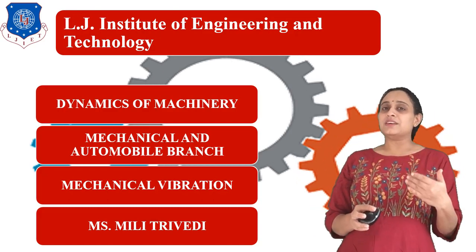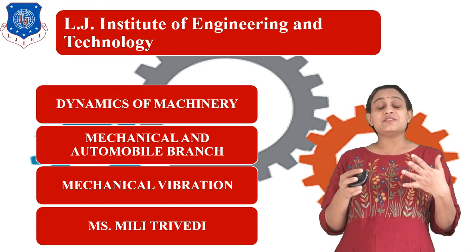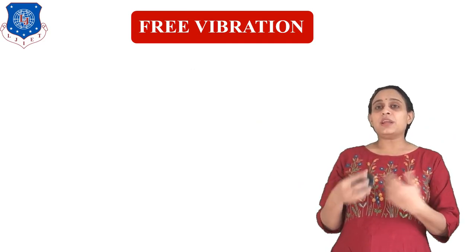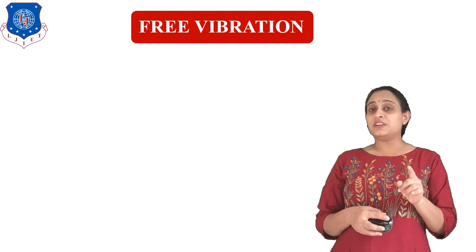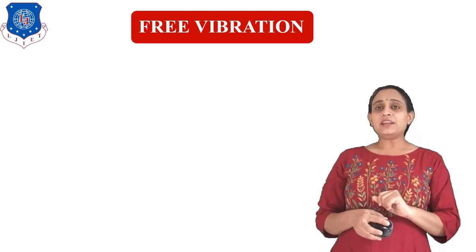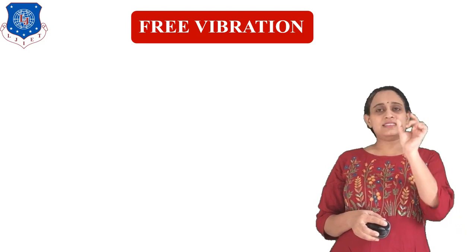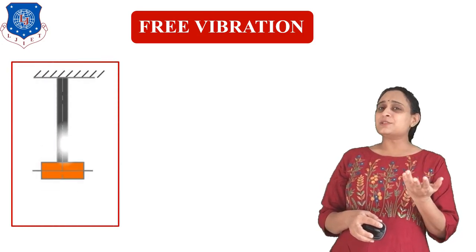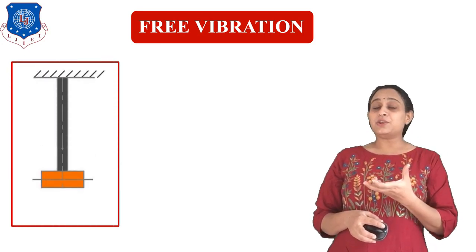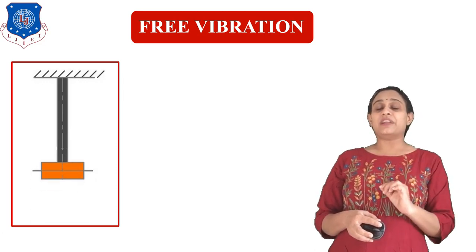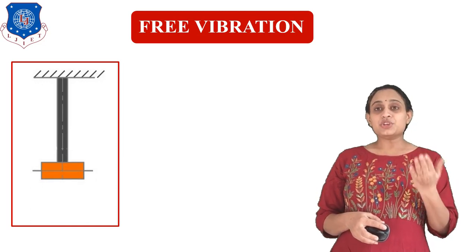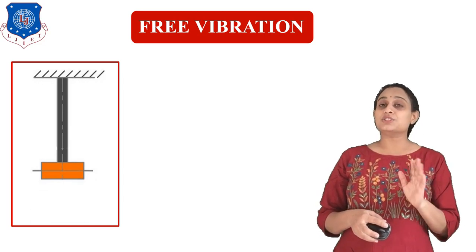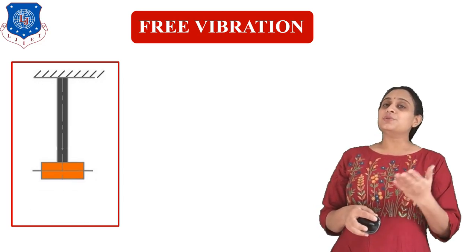If we study vibration in more detail, it has different parts and different effects. The first effect of vibration is free vibration. If we attach a spring to a mass and that spring moves up and down, the motion of the mass gives us the free vibration value. This motion is known as longitudinal motion and the vibration is known as longitudinal vibration.